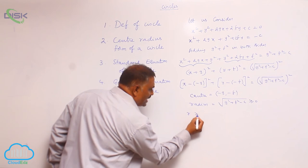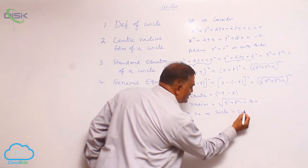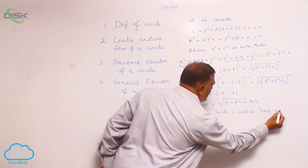Now if r is greater than 0 then circle is called real circle.